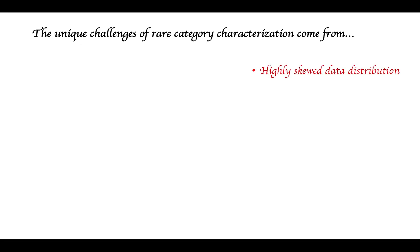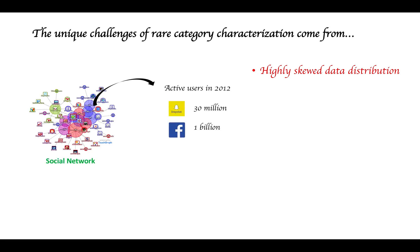The first unique challenge of rare category characterization comes from the highly skewed data distribution. For example, in 2012, Snapchat only had 30 million users while Facebook had 1 billion users, which makes it challenging to identify such emerging social networks like Snapchat in real scenarios.